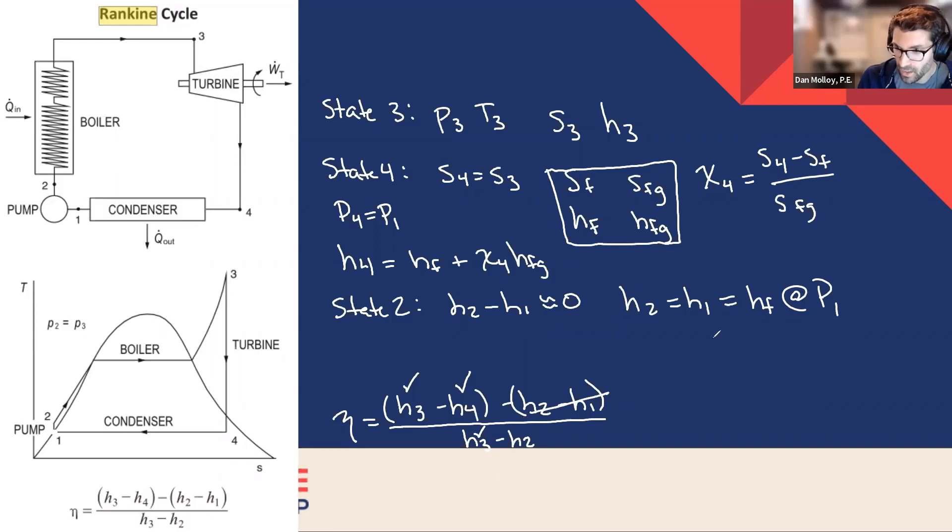So now we know H1 and H2, that's everything we need to find the efficiency of the cycle. And that's assumed to be the maximum theoretical possible efficiency of the cycle because the turbine was assumed to be isentropic, 100% isentropic efficiency.